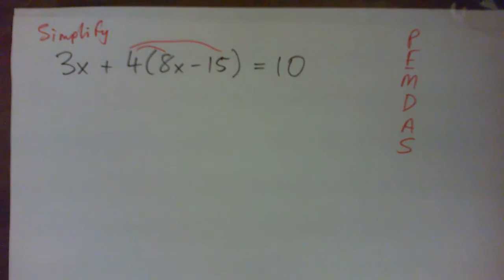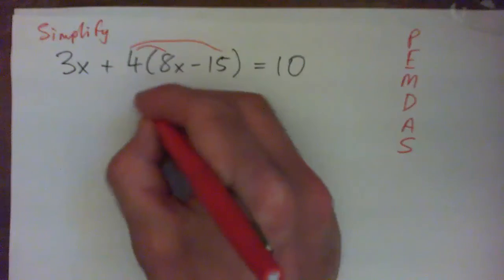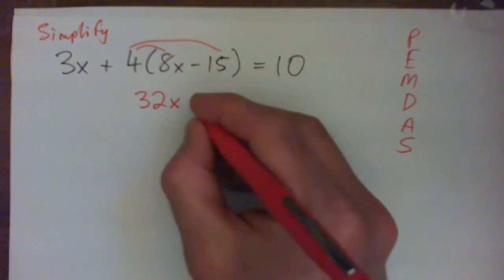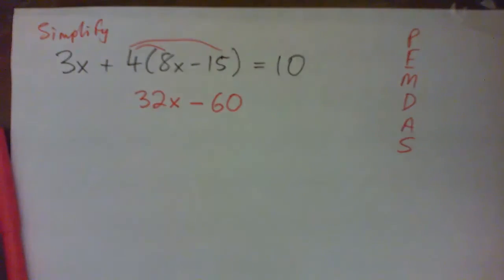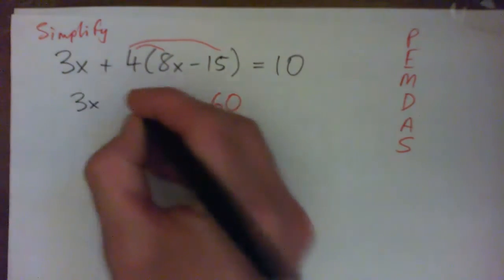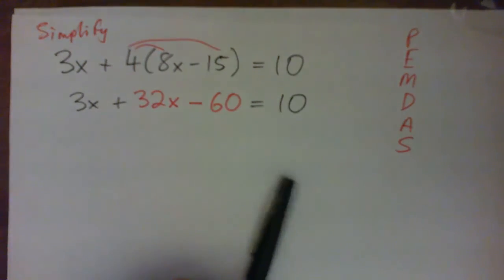I'll solve this equation. I'll just go over that then. So 4 times 8x, we get 32x. And then 4 times negative 15, negative 60. So that's the first step, is to just multiply that for it. And then we just write everything out again. Does that make sense? Alright. Any questions on that?